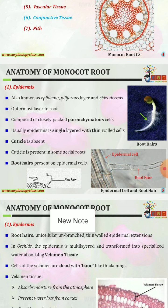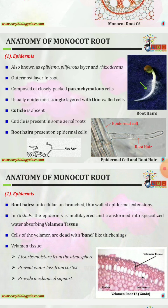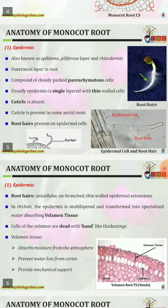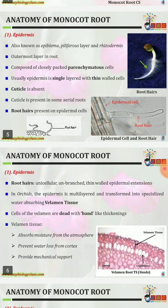The first part is the epidermis, also known as epiblema, piliferous layer, or rhizodermis. It is the outermost layer of the root, composed of closely packed parenchymatous cells. Epidermis is usually a single layer with thin-walled cells; cuticle is absent, though present in some aerial roots. Root hairs are present on the epidermal cells, as depicted in the picture.